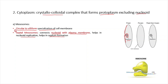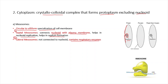Apart from septal mesosomes, we have lateral mesosomes. Unlike septal mesosomes, lateral mesosomes are not connected to the nucleoid. Instead, they contain respiratory enzymes and help in bacterial respiration, functioning similarly to mitochondria.